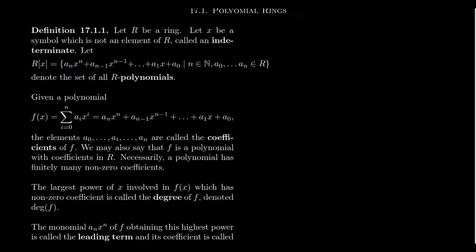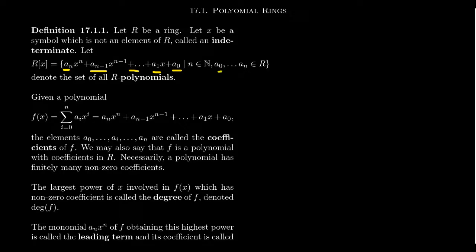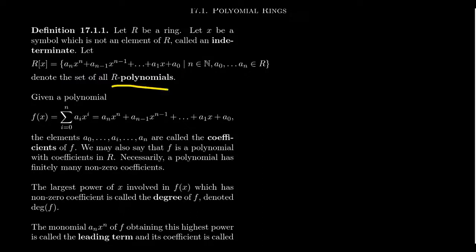With that set-theoretic situation behind us, we can define the set R adjoined X, which is going to be the set of polynomials whose coefficients come from R. We get polynomials of the form: A_N, A_{N-1}, ..., A_1, A_0 — these are all numbers belonging to the ring R, the so-called coefficient ring, and we call them coefficients. We have this linear combination of various powers of the indeterminate X, where the coefficients come from our ring R. This is then going to be the ring of polynomials, sometimes called the ring of R-polynomials.